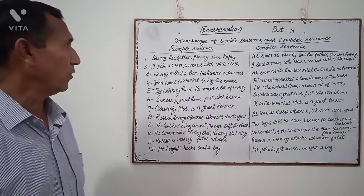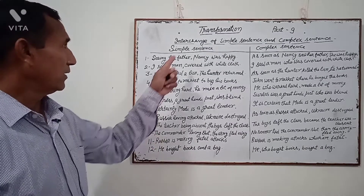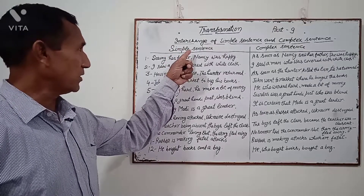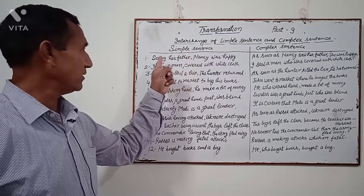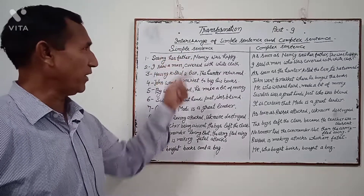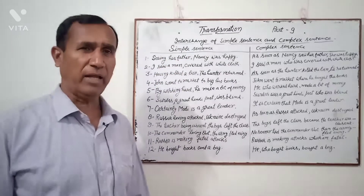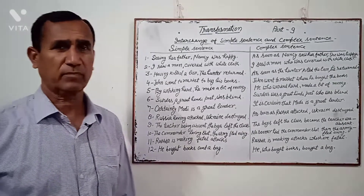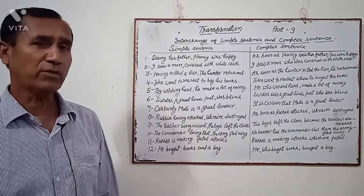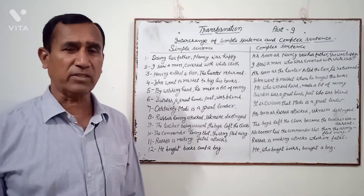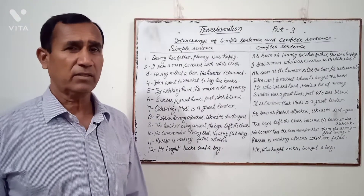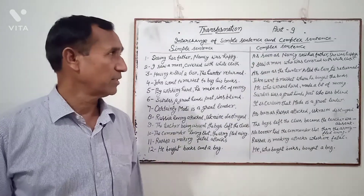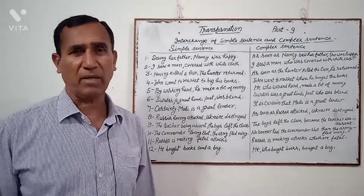So now, example one — Simple sentence: "Seeing her father, Nancy was happy." Complex sentence: "As soon as Nancy saw her father, she was happy."